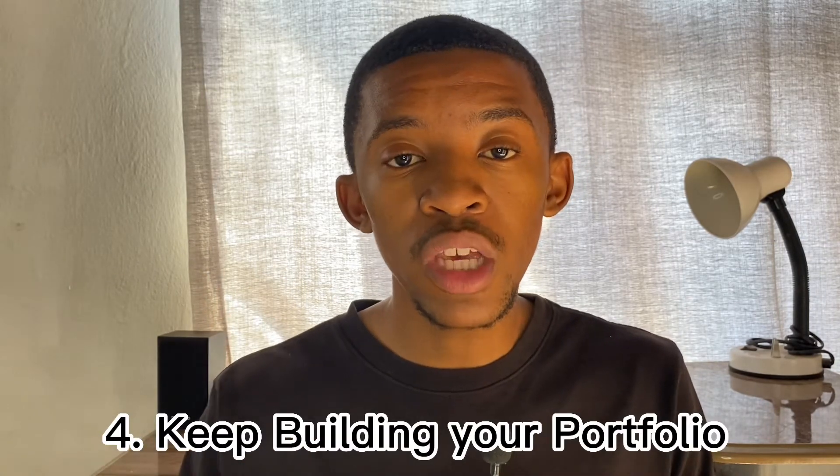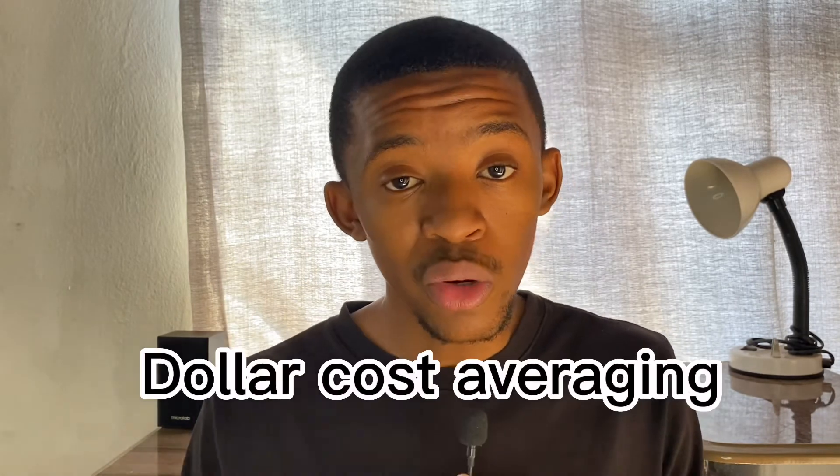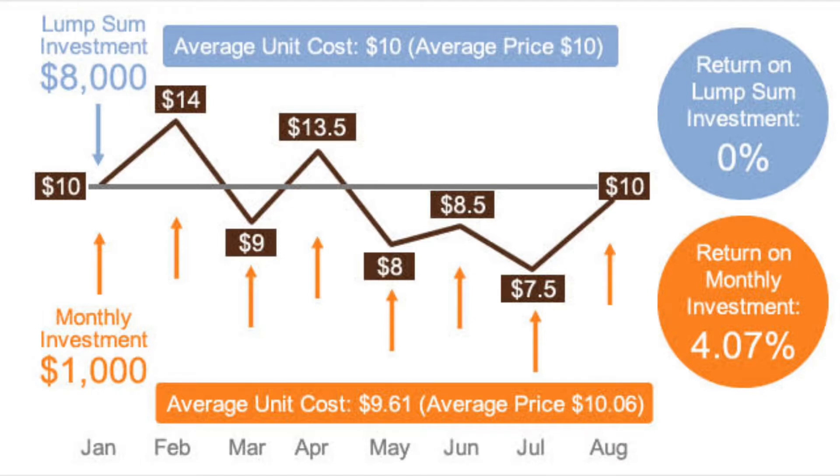Now that you've laid the foundation, the fourth tip is to keep building your investment portfolio by adding money on a regular basis. For example, if you have 8,000 rand to invest in the stock market, instead of putting it all in as a lump sum, you can use a method called dollar cost averaging — or in this case, rand cost averaging. This smooths out the highs and lows of the market by investing the same amount over a period of time, spreading 8,000 rand over eight months at 1,000 rand per month.